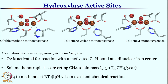Methane to methanol transformation is the most difficult transformation one can perhaps think of, and that is precisely due to the fact that methane has a 104 kcal per mole bond dissociation energy. This class of enzymes is not limited to converting methane to methanol.